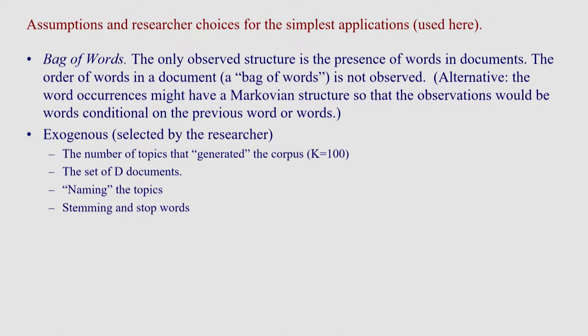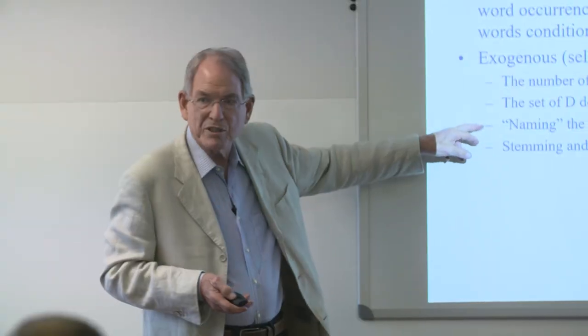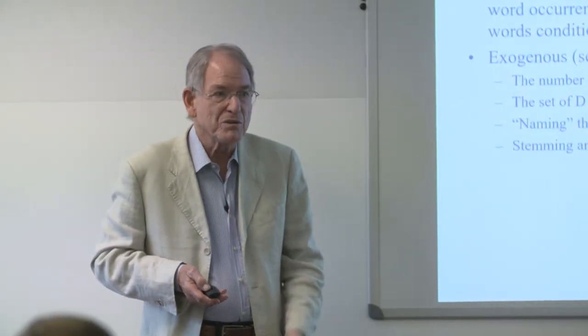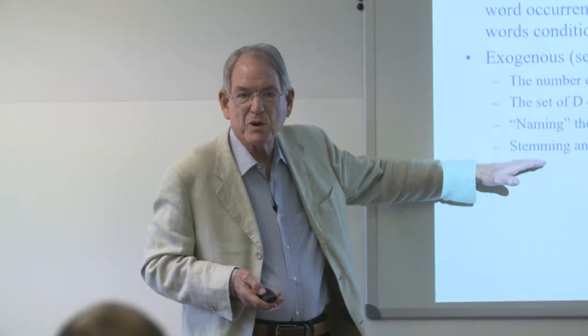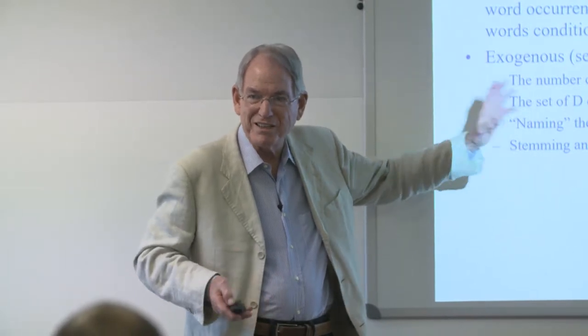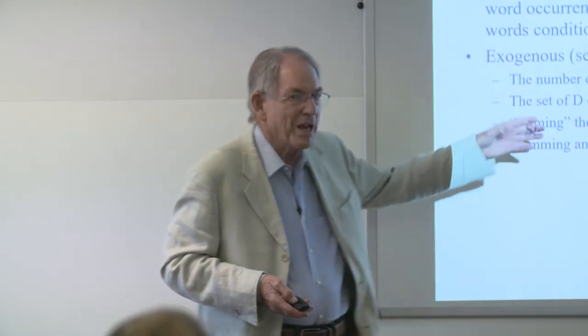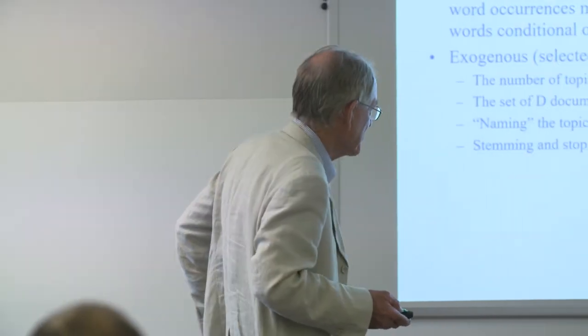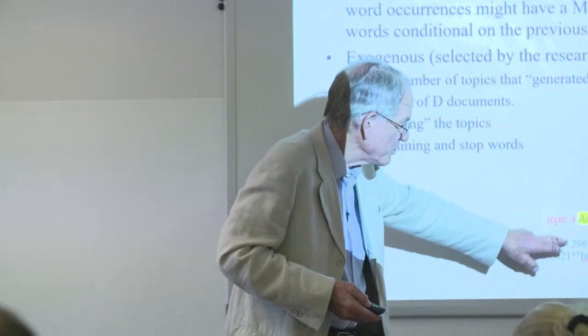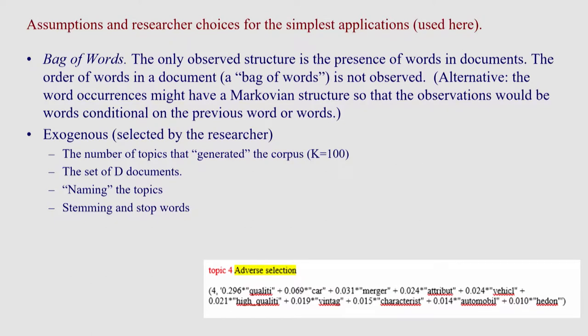We pick the documents, name the topics, and have a vector of word weights. We stem words — so a word can appear as adjective, adverb, and so on — and we eliminate prepositions. For example, topic four: the words are quality, car, merger, and so on. You look at this — it's actually a list of 10,000 words — you look at the top ones and say, 'that looks like adverse selection.' So we named that adverse selection. That's obviously a judgment call. We take all the papers from these journals from 1900 to the present, stem and eliminate stop words. This gives us almost 11,000 words in these vectors, and the number of documents is 27,000. So it's just a large matrix of observations.